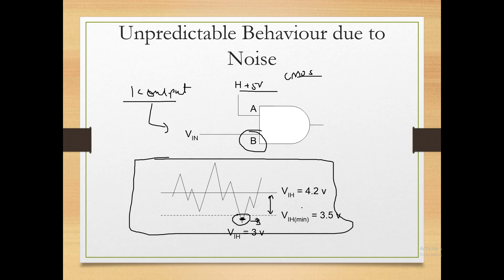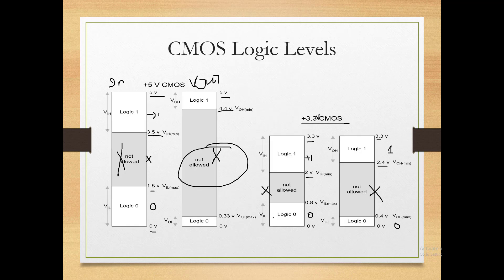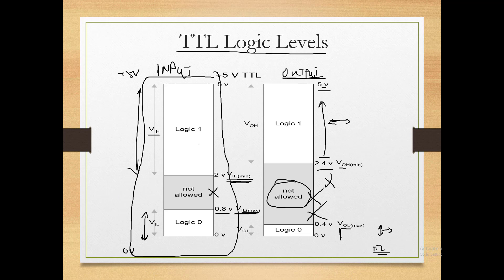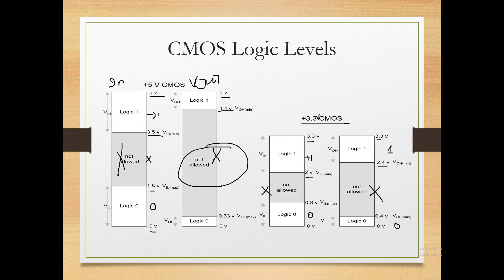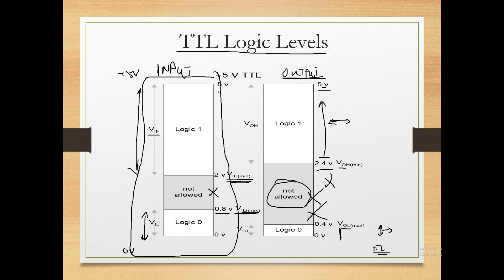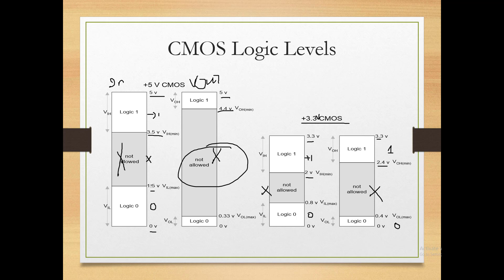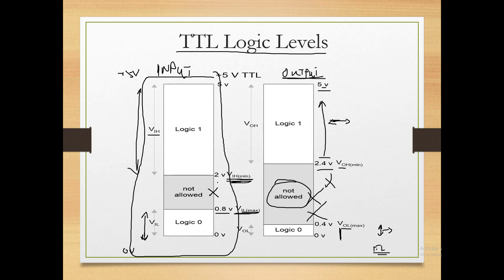Therefore noise margin is an important parameter — for any technology, the higher the noise margin, the better that IC is for us. For comparison: 5V CMOS input range is 3.5 to 5V, whereas 5V TTL input range is 2 to 5V. So CMOS has a much higher input noise margin than TTL. For logic high CMOS has a larger margin, though for logic low the margin is 1.5V (from 0 to 1.5V — that's 1.5V noise margin) compared to CMOS 5V: 2 to 0.8 gives 1.2V noise margin.